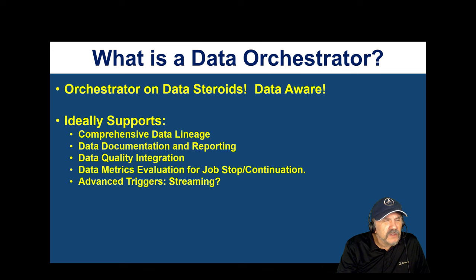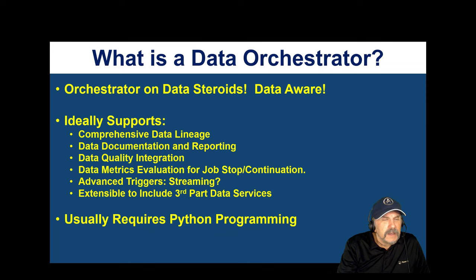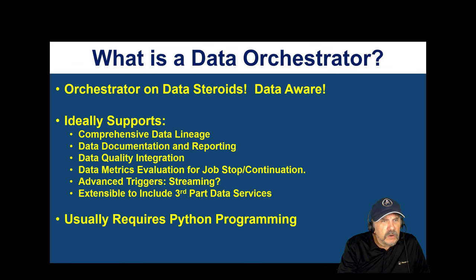Support for streaming sources or event triggers is also important — not always fully supported on orchestrators, but useful for telling jobs when to run beyond just a time schedule. Extensibility is really important too: the ability to include third-party data services like Great Expectations or DBT to extend and improve your overall end-to-end processing. Most data orchestrators are written in Python or use Python packages, so you need to be ready to commit to Python programming across your team.